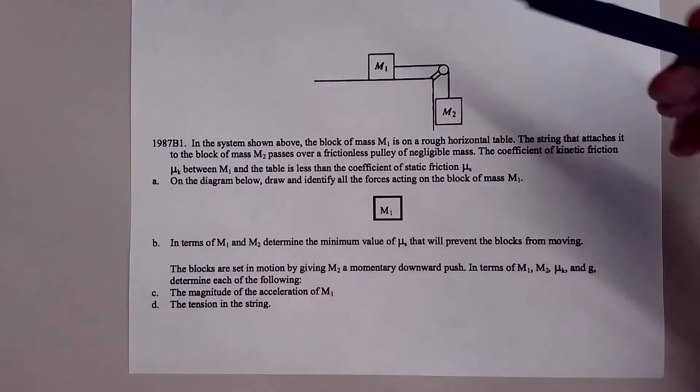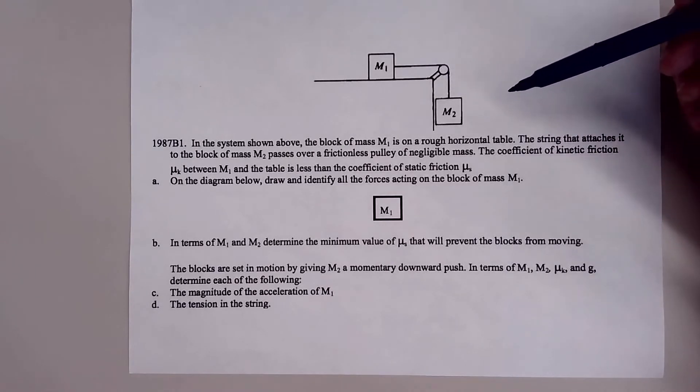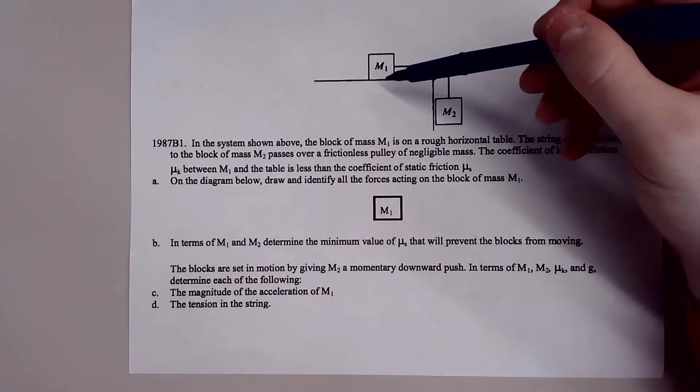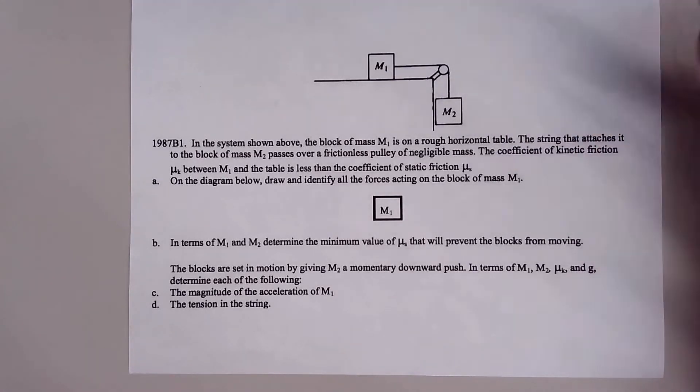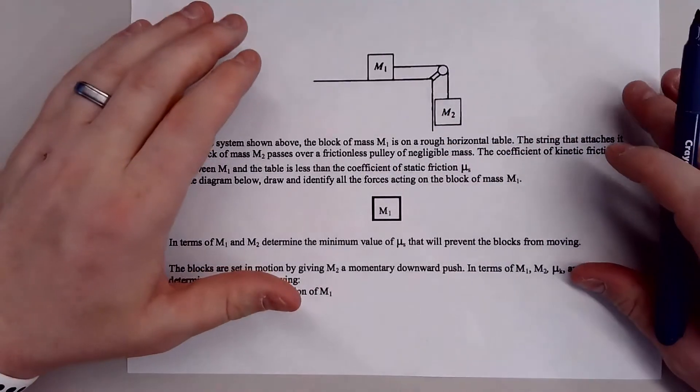You've got two blocks and they're connected by some frictionless pulley and the string is attached to the block of M2 right here, passes over this frictionless pulley and there is some friction on M1 in this table. And so pretty much it's going to ask us to solve some things algebraically. So on the diagram below,